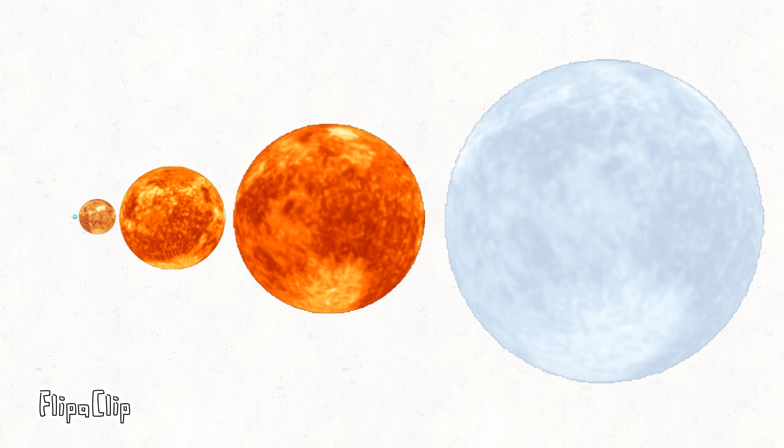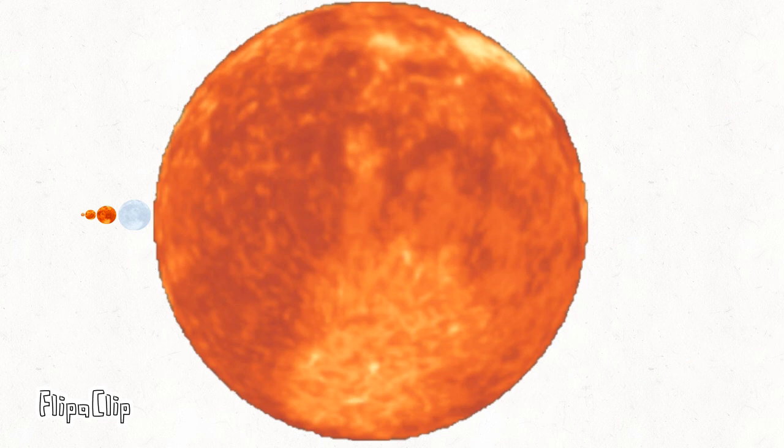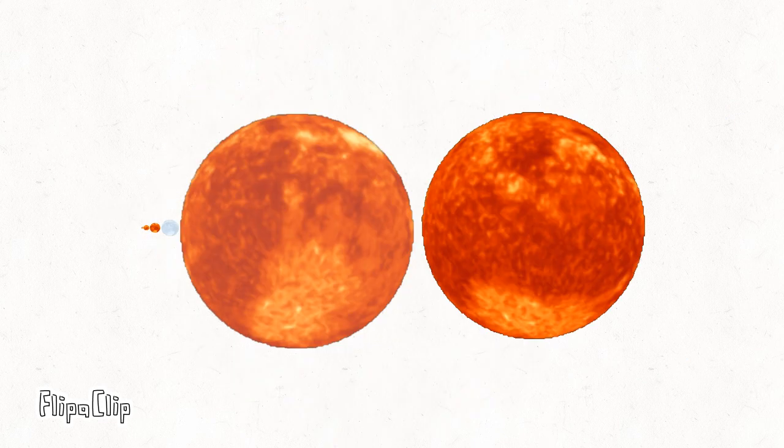Hi, I'm Rigel, a blue-white supergiant. See, I am Betelgeuse, and I'm a red supergiant, I'm class. Antares, I'm a red supergiant that won't last.